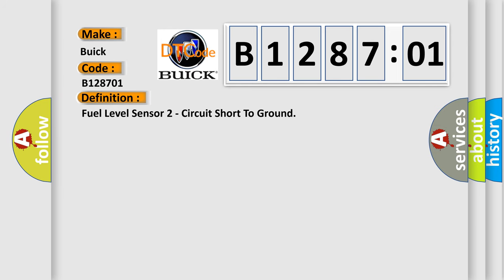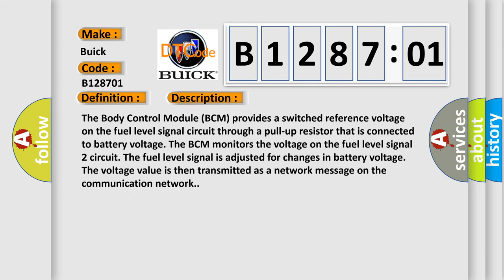Here is a short description of this DTC code. The body control module (BCM) provides a switched reference voltage on the fuel level signal circuit through a pull-up resistor that is connected to battery voltage. The BCM monitors the voltage on the fuel level signal 2 circuit. The fuel level signal is adjusted for changes in battery voltage, and the voltage value is then transmitted as a network message on the communication network.